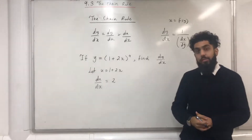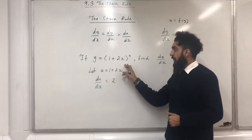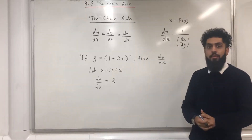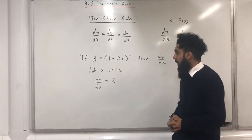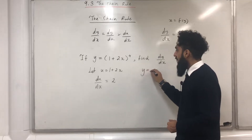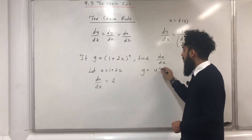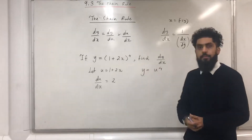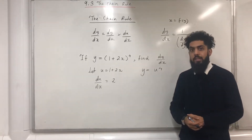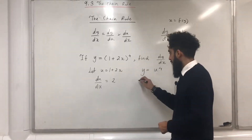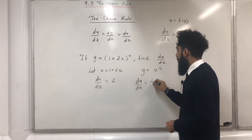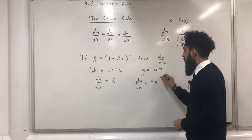Now I can rewrite y in terms of x as y in terms of u. Doing that, I get y is equal to u to the power of 4. Now I need to work out dy over du, which is equal to 4u to the power of 3.